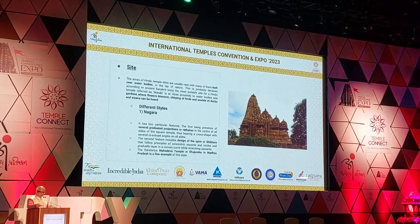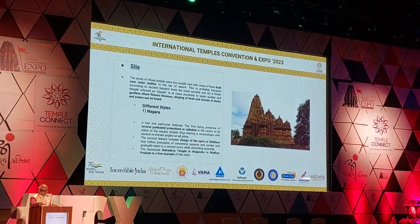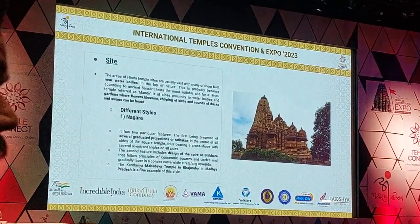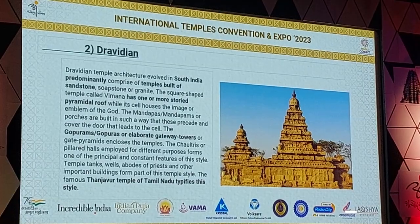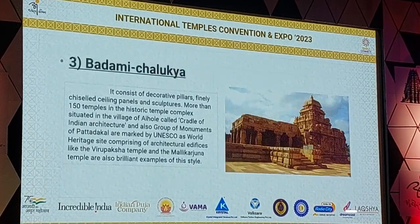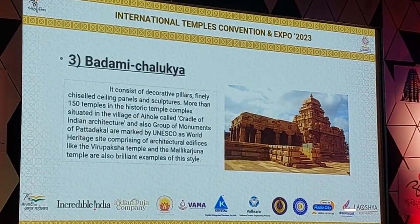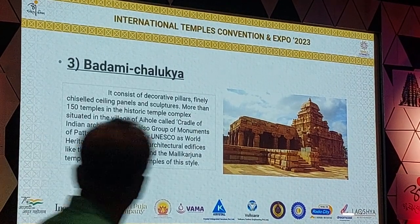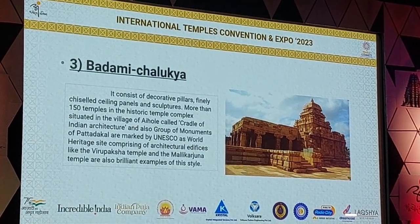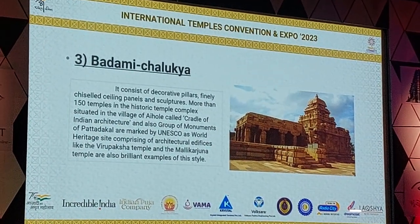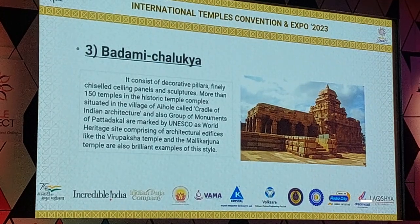There are several graduated projections on all sides of the square tower. The third style is Badami Charukker. It consists of a decorative pillar, finely chiseled ceiling panels and sculptures.